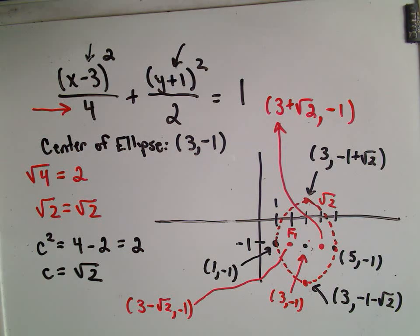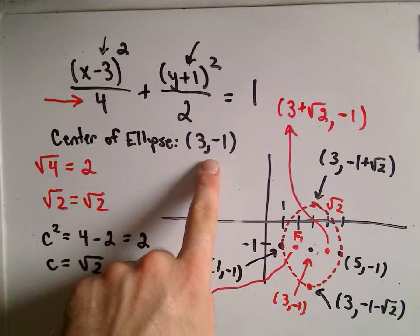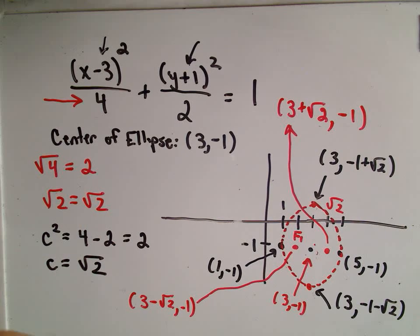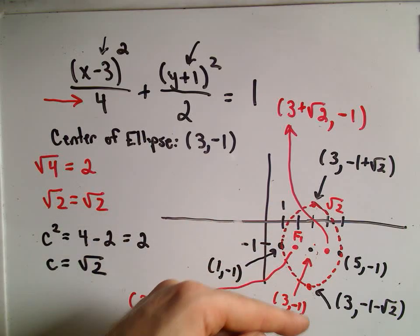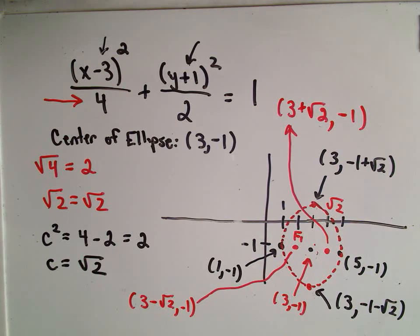To graph one of these, you need to complete the square to put the equation in standard form. Find the center, then find new points by going left and right of the center for the x part, and up and down for the y part. Find the c value, then move that distance along the major axis to find the foci. Definitely practice a couple of problems. If you still have questions or comments, feel free to post them, and hopefully someone can help you out.